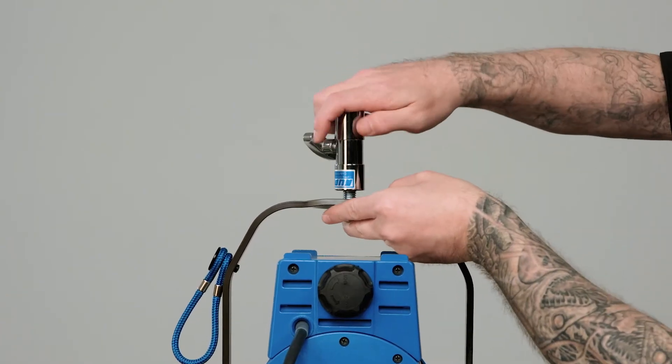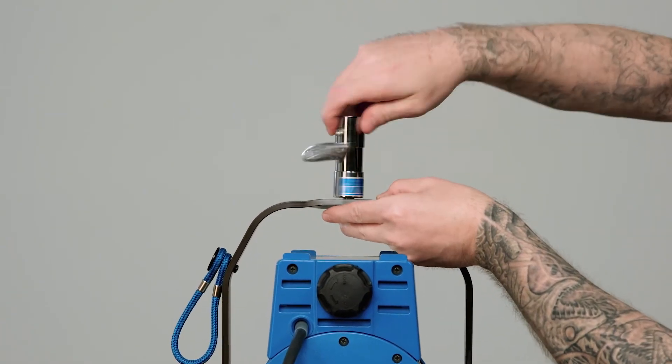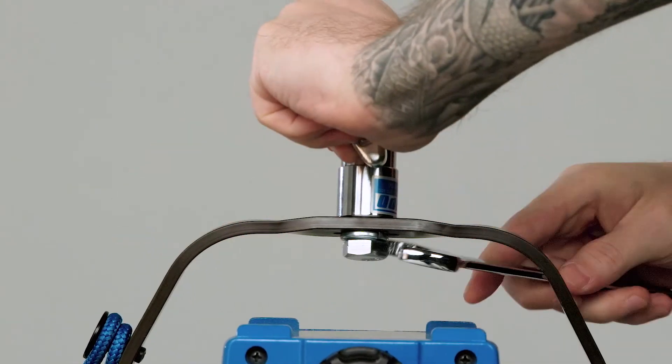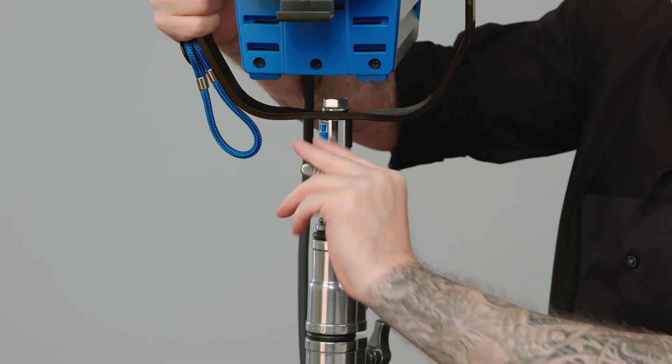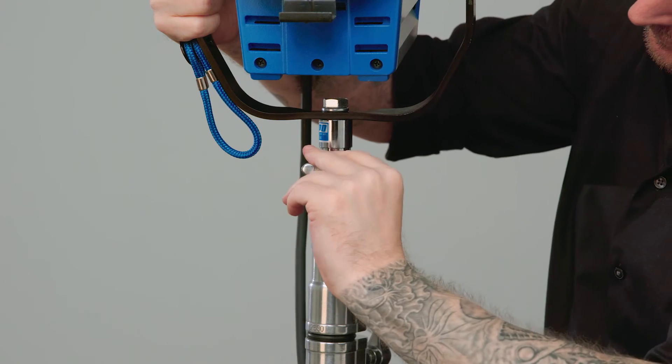It's traditionally used to stand mount fixtures that were designed for pipe clamps in TV studio applications. I'm mounting this ARRI 1K to the c-stand by using the TVMP.